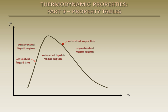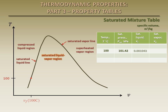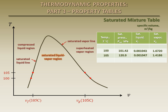We will start by looking at the property table for the saturated liquid-vapor mixture region. We can look up the properties as a function of temperature. For a given temperature, the table shows the saturation pressure, or the pressure at which vaporization will occur at that temperature. It also shows the specific volume of a saturated liquid at the given temperature, Vf, and the specific volume of the saturated vapor at the given temperature, Vg. Each of these properties is shown for discrete temperature values over the saturated liquid-vapor mixture region.